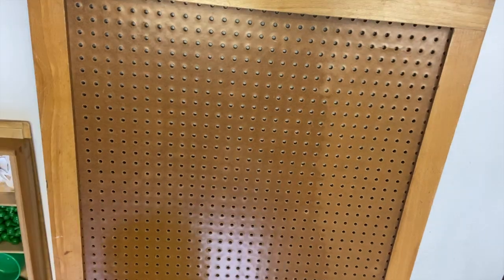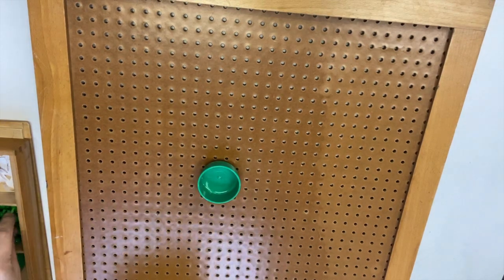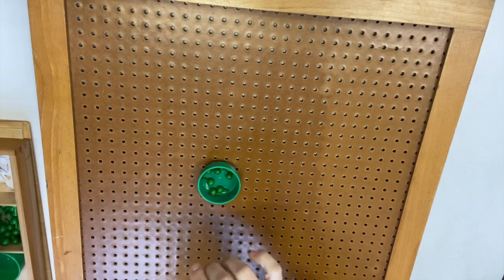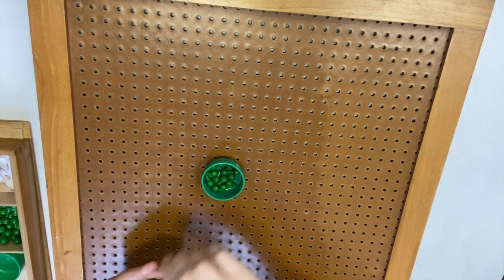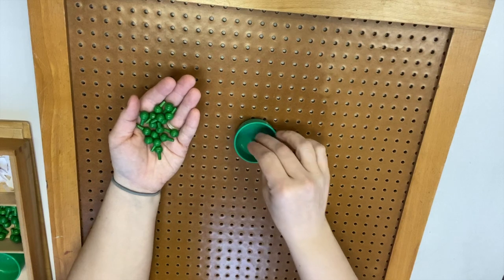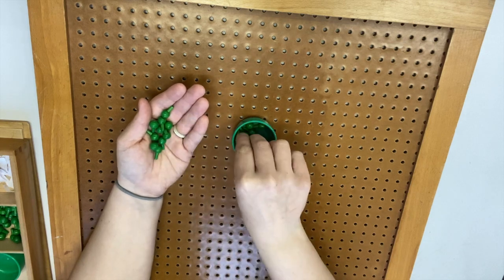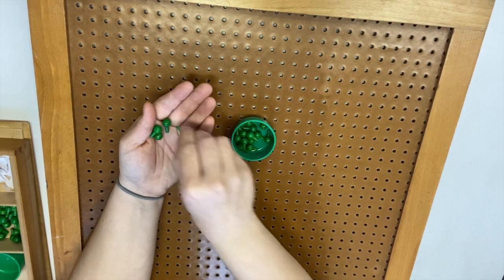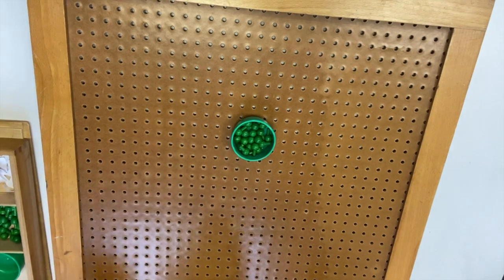So I am going to take my green cup and I'm going to put 18 pegs in it. One, two, three, four, five, six, seven, eight, nine, ten, eleven, twelve, thirteen, fourteen, fifteen, sixteen, seventeen, eighteen. I'm going to count these again just to make sure I didn't mess it up. One, two, three, four, five, six, seven, eight, nine, ten, eleven, twelve, thirteen, fourteen, fifteen, sixteen, seventeen - it's a good thing I counted again - eighteen. All right, we're good.